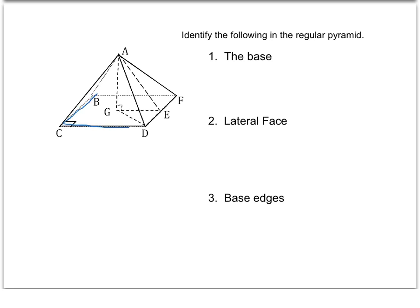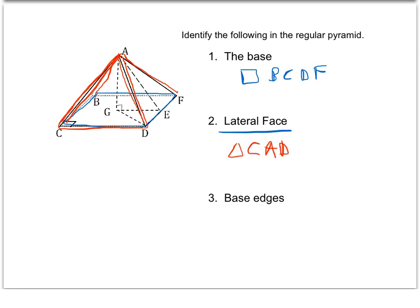For number one, if we're identifying the base, the base in this figure is a square because we're told it's a regular pyramid so all sides are equal. We would name that square BCDF — the order doesn't matter. For number two, the lateral face: this pyramid has four lateral faces because each of the triangles that aren't part of the base are a lateral face. One lateral face would be CAD. There will be four lateral faces for this pyramid, and the number of lateral faces coincides with the sides of the base. Lateral faces for a pyramid are always triangles because they always come up to that apex point.